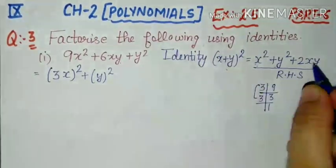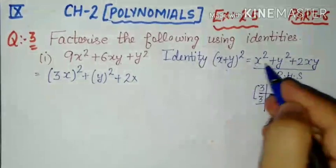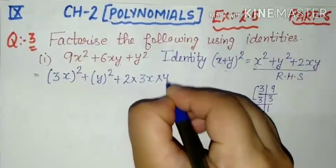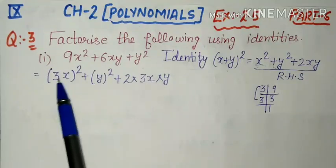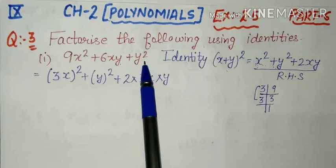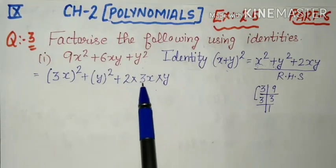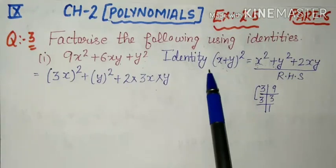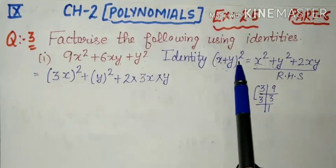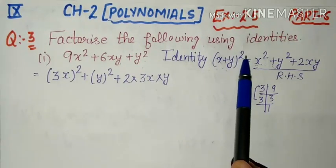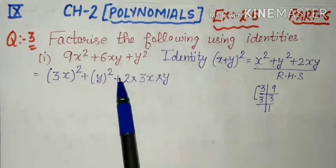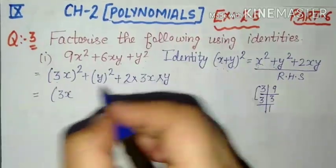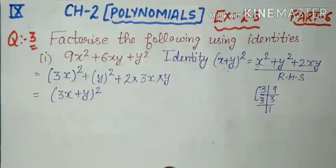Ab third term humne likhi nahi hai: plus 2 multiply in dono terms ka product — first term aur second term. Yahan first term kya hai? 3x. Aur second term kya hai? y. Dekho agar hum inko multiply karein: 3 ka square 9 — 9x² aa jaega. Plus y ka square — y² aa jaega. In teeno terms ko multiply karein: 3×2=6xy aa jaega. Simply humne isko aise break karke likha hai is form mein. Ab humne is form mein likhna hai isko — yeh right hand side ki form mein hai. Left hand side mein hame likhna hai: x plus y ka square. Means jin terms ka square tha unka whole square likhna hai. Saari terms plus mein thi to beech mein plus ka sign aa jaega. So 3x plus y ka whole square.